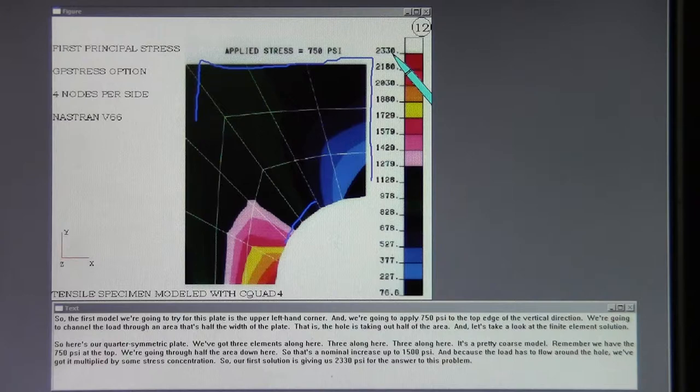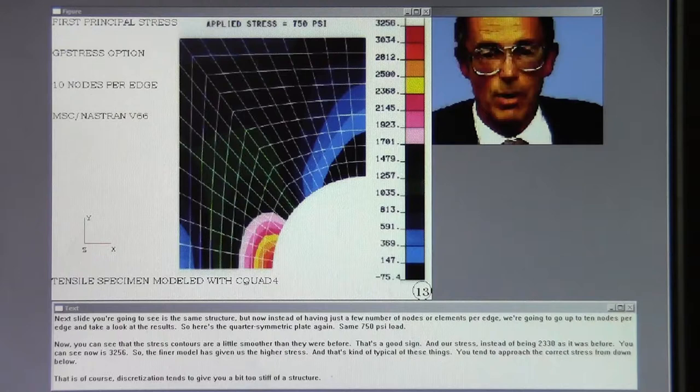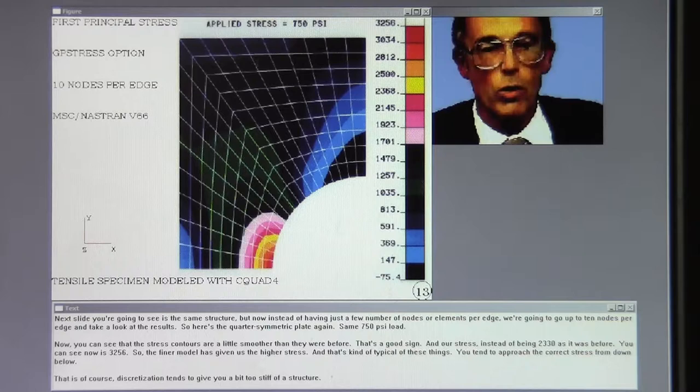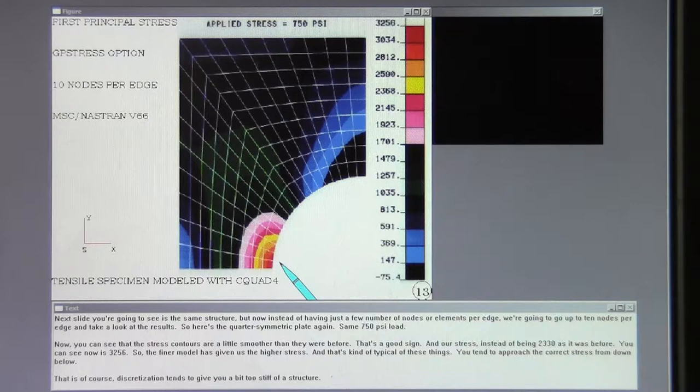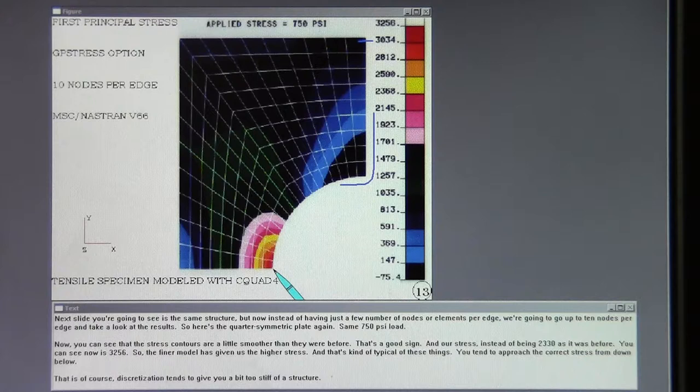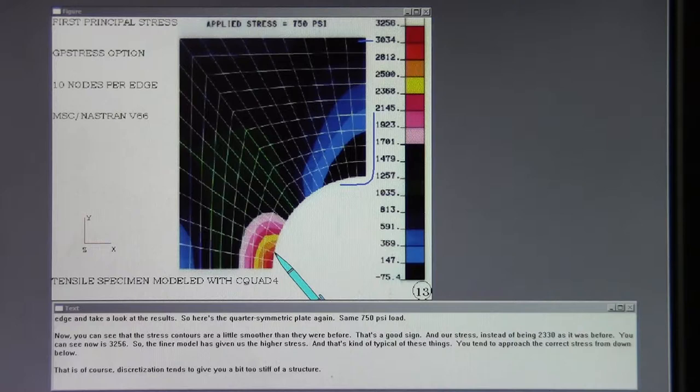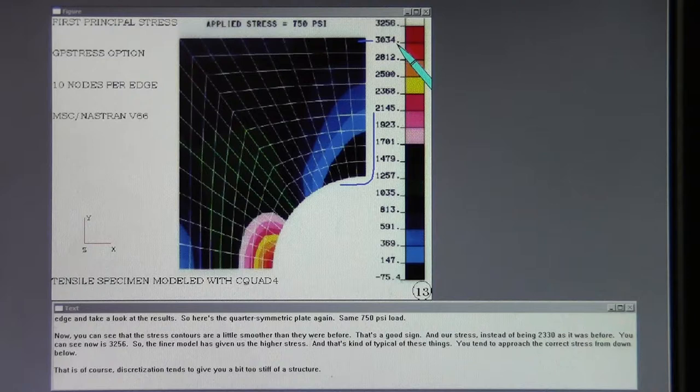The next slide you're going to see is the same structure, but now instead of having just a few number of nodes or elements per edge, we're going to go up to 10 nodes per edge and take a look at the results. So here's the quarter-symmetric plate again, same 750 psi load. Now you can see that the stress contours are a little smoother than they were before. That's a good sign. And our stress, instead of being 2330 as it was before, you can see now it's 3256. So the finer model has given us the higher stress. And that's kind of typical of these things. You tend to approach the correct stress from down below. That is, a coarse discretization tends to give you a bit too stiff of a structure.